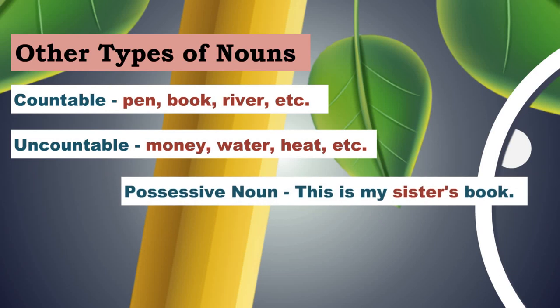Then we have the possessive noun — a noun used to indicate possession. For example, this is my sister's book. Sister is a noun, but you are saying sister's book, so sister is used to show possession. We can call it a possessive noun, but it is here used as a possessive adjective — possessive noun used as a possessive adjective.